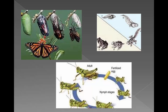This slide shows metamorphosis in grasshoppers at the bottom, frogs at the top, and butterflies on the right. You can see how the larval stage is very different from the adult stage, except for the grasshopper. Grasshoppers don't have a true larval stage — they have a nymph stage, which just looks like a small immature adult.